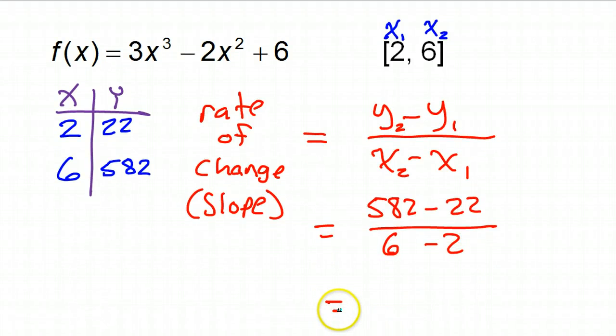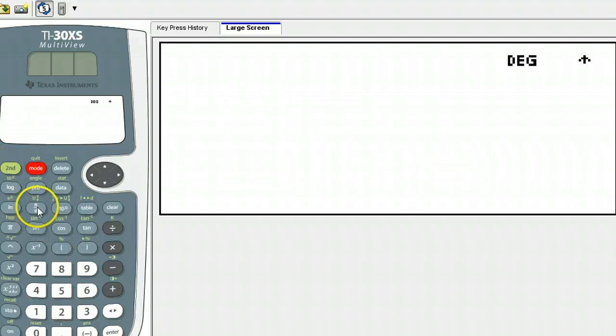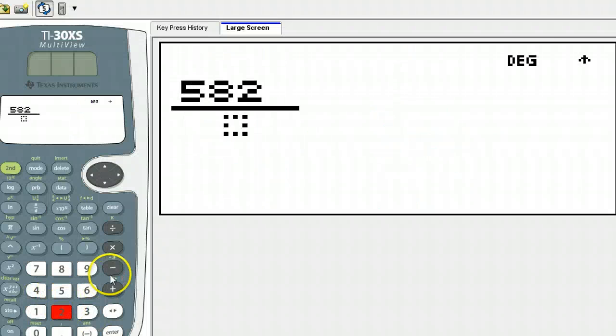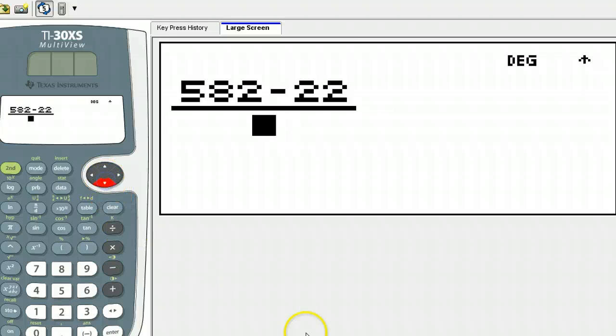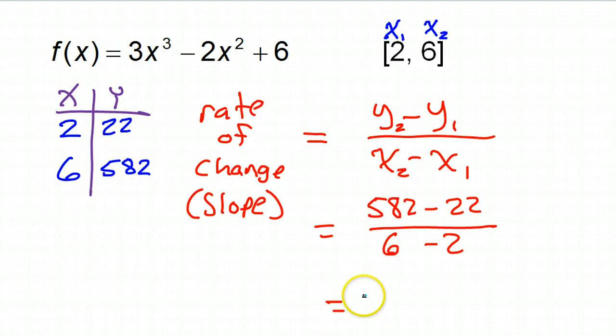Okay, so this is going to give us our rate of change. Okay, so we just need to calculate this. And we could even put this in the calculator if we wanted to be really lazy about it. 582 minus 22. So 582 minus 22. Okay, 6 minus 2. All right, obviously we could do these things by hand. But I'm just making a point that, boom! The calculator will do it for you should you so desire. 140. So in this case, the rate of change is 140.